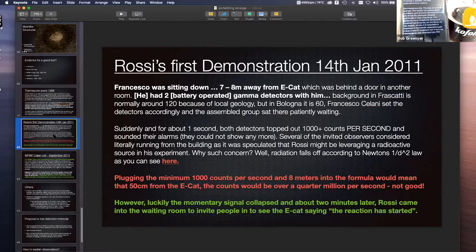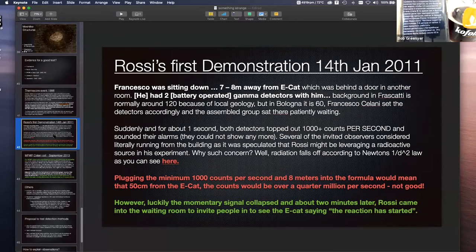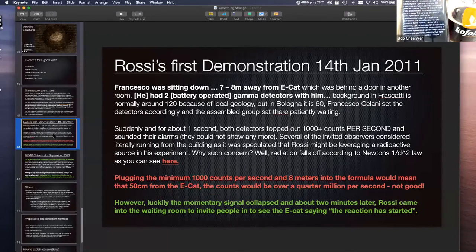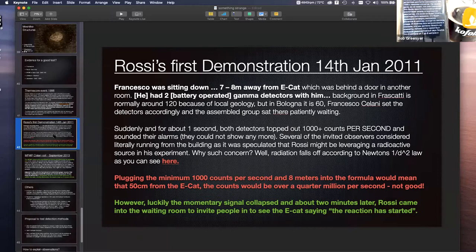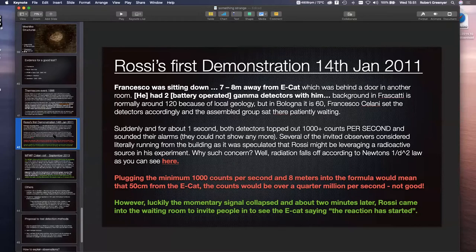Now, in Rossi's first demonstration on the 14th of January 2011, Francesco Cialani was sitting down seven to eight meters away from the Ica. He had two battery operated gamma detectors with him. He calibrated them. But suddenly, for about one second, both detectors topped out at 1000 plus counts. And so he calculated that if he was standing by the reactor at the time, it would be sort of about quarter of a million counts per second based on the fall off law. Luckily, the momentary signal collapsed. And about two minutes later, Rossi came into the waiting room to invite people in to see the Ica, saying the reaction has started.